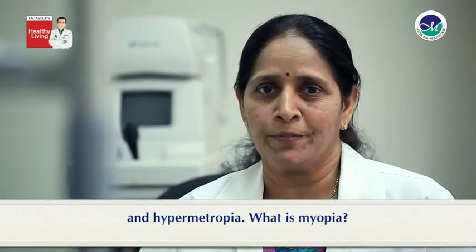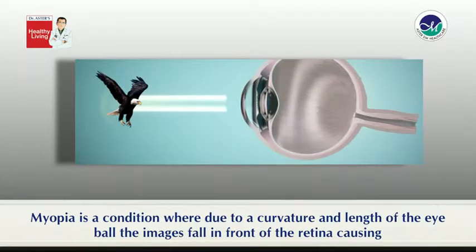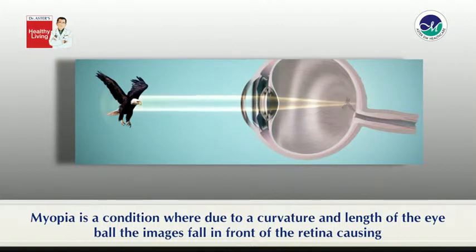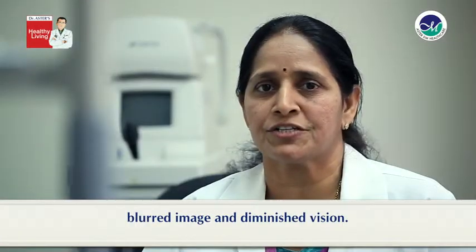What is myopia? Myopia is a condition where, due to the curvature and length of the eyeball, the images fall in front of the retina, causing a blurred image and diminished vision.